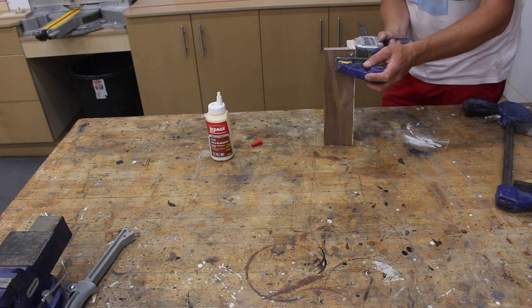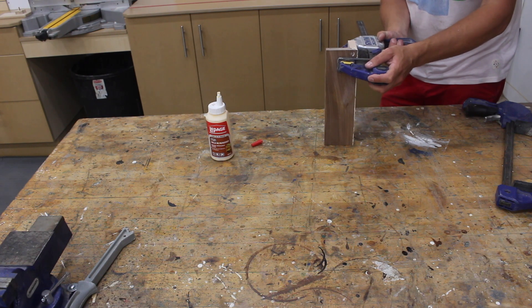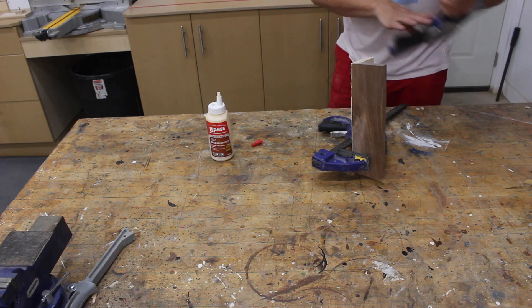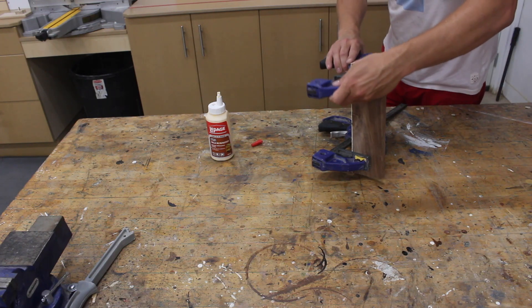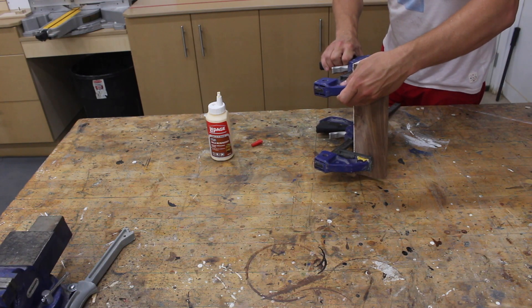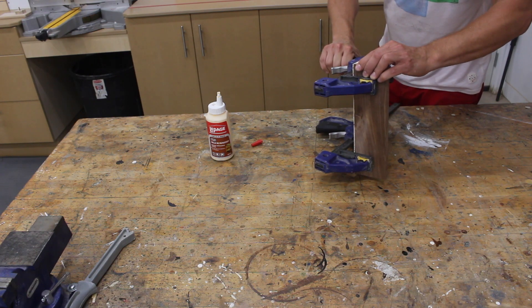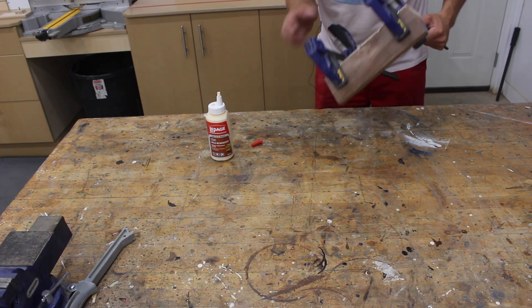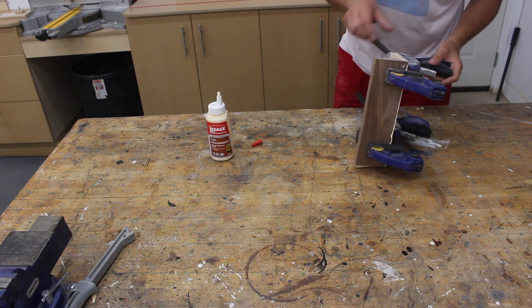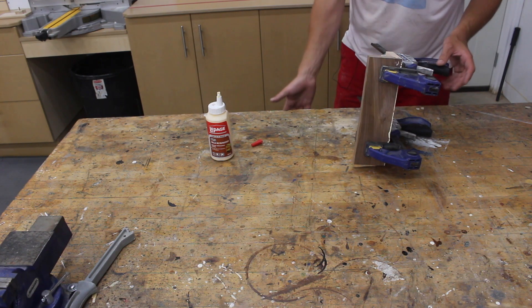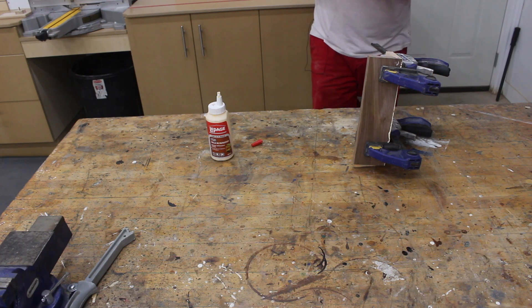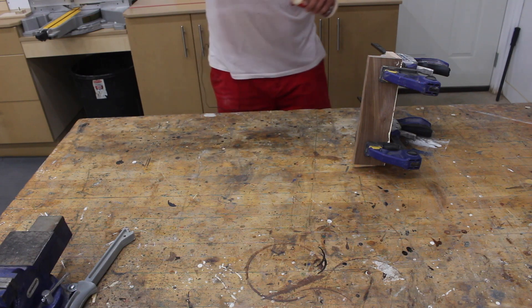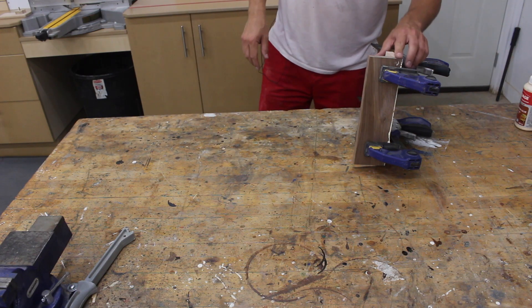The best part about these lock miters is when you clamp them they don't slide around. Anyone that has glued up a miter before knows that it can be difficult to clamp because they just want to slide around. Wow, that's looking really nice. Okay, I'm going to give that probably about 30 to 40 minutes to dry and we'll take it off, clean up the glue squeeze out and see what it looks like.